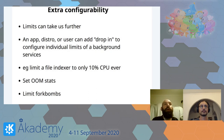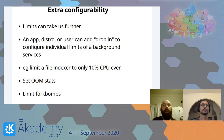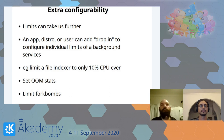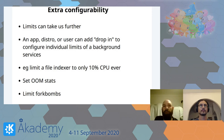Then we can apply limits, which can be done by application, the distro, or the user. We can limit file indexers to only ever take 10% of your CPU. We can set various out-of-memory stats. And we can stop fork bombs from happening.